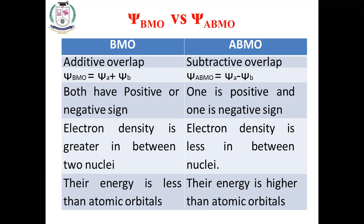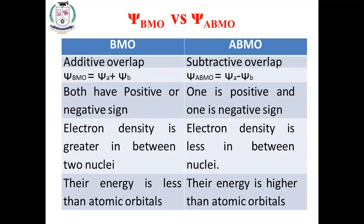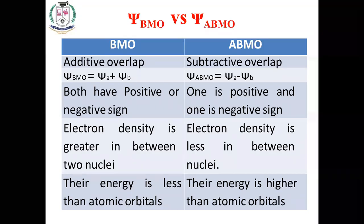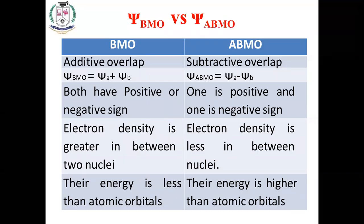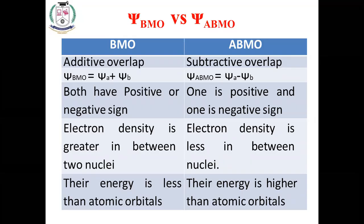In BMO, both lobes have the same sign (both positive or both negative), and electron density is greater between the two nuclei. In ABMO, one lobe is positive and one is negative, so electron density is less between the nuclei. The probability of finding the electron in ABMO is reduced by −2·psi A·psi B. Therefore, BMO energy is lower and ABMO energy is higher than that of the atomic orbitals.